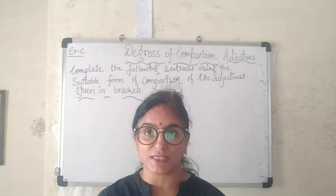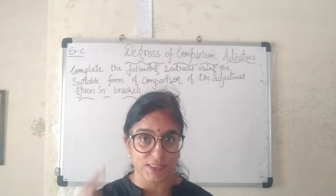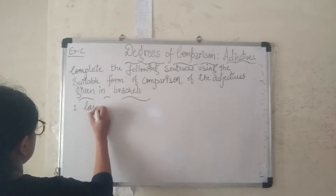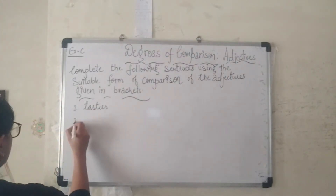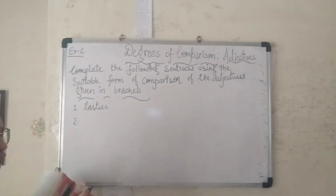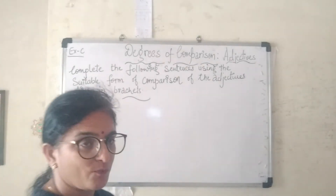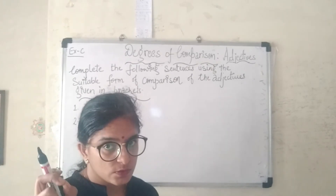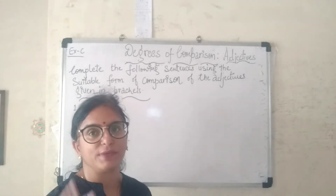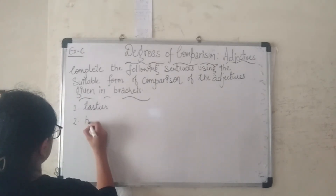Sentence 1: 'Today's breakfast is ___ than yesterday's.' The adjective given is 'tasty', and since 'than' is written, the answer is 'tastier'. Sentence 2: 'Amravati is the ___ restaurant in this area.' The adjective is 'good'; since 'the' precedes the blank, the superlative form is used — the answer is 'the best'.